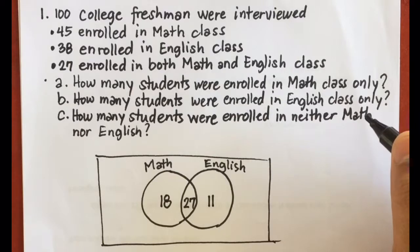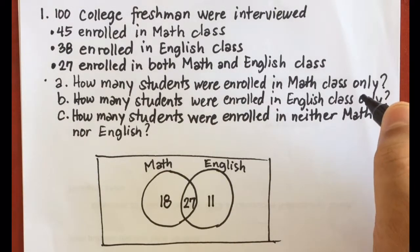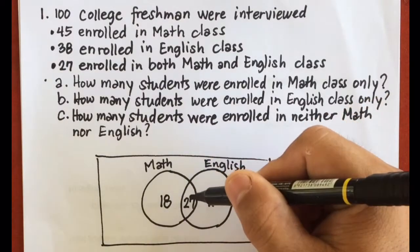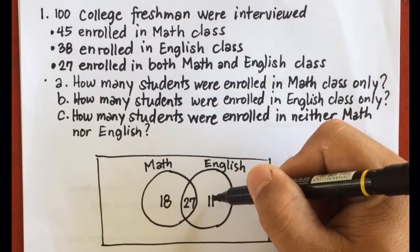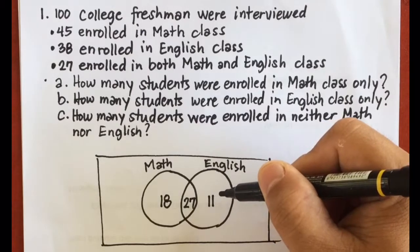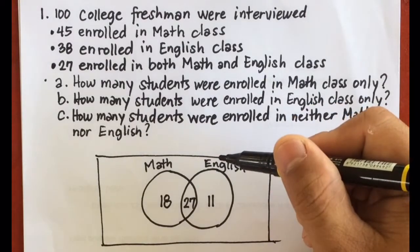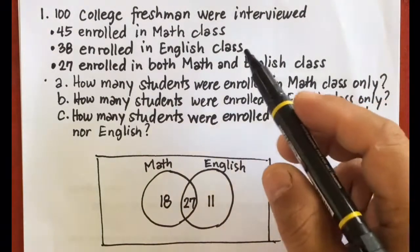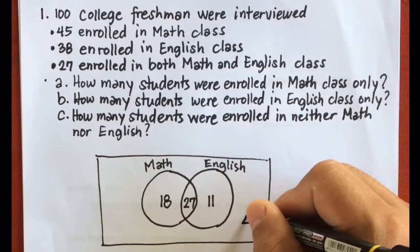To find the number of students enrolled in neither math nor English, we add the three values: 18 plus 27 is 45, plus 11 is 56. There are 56 students enrolled in math or English. To get the number who did not enroll in either subject, we subtract 100 minus 56, so the answer is 44.